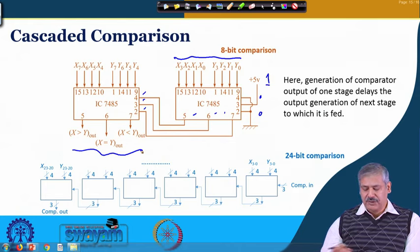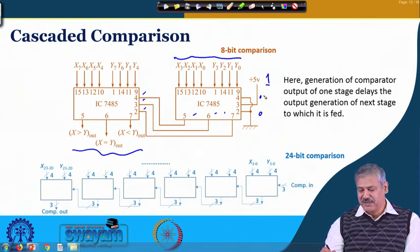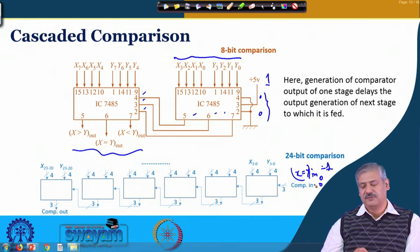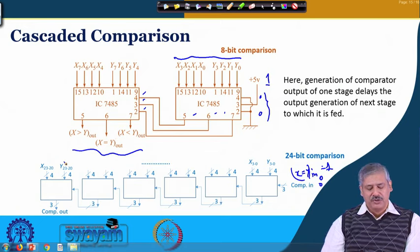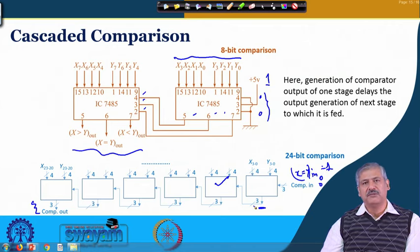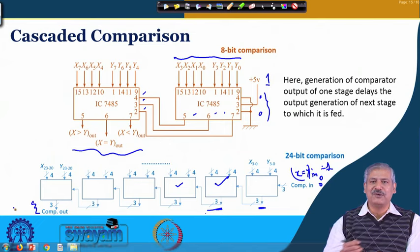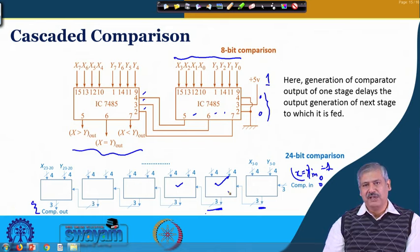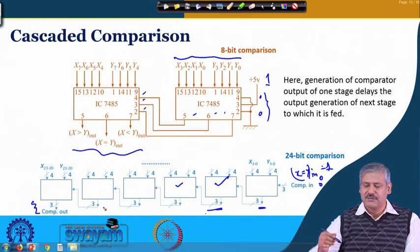For 24-bit comparison, you need 6 such ICs. In a serial configuration, you connect them in a chain where the first IC has its equal input set high and other cascade inputs set low, and each subsequent IC receives its cascade inputs from the previous one. The delay at every stage adds up cumulatively, which is the drawback of this serial approach.